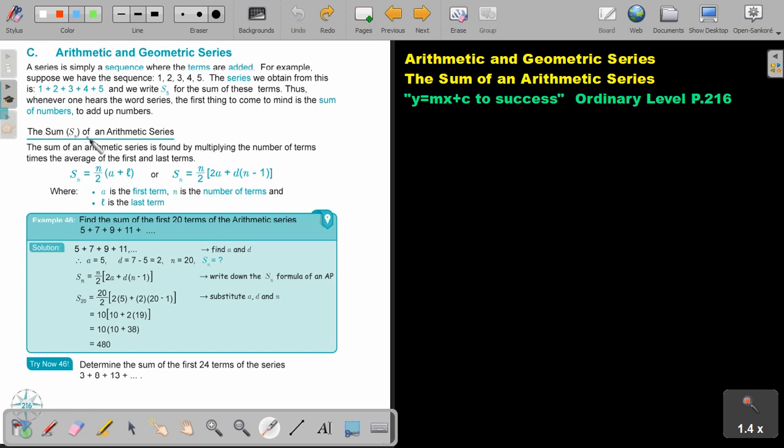Let's focus on the sum of an arithmetic series or an AP. The sum of an arithmetic series is found by multiplying the number of terms times the average of the first and the last term. So you can either use, if you have the first and the last terms, you add it up and multiply it with the amount of terms and because it's average you divide it by 2. But if you don't have the last term and you only have the first three terms, then this formula will be better. It's N over 2, same, but it's 2A plus D times N minus 1. A is the first term, N is the number of terms and L is the last term.